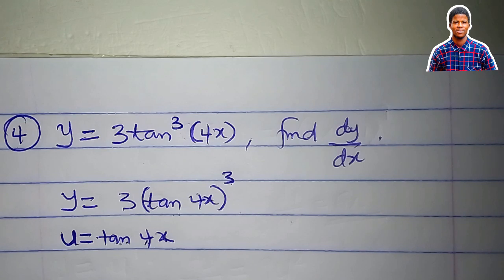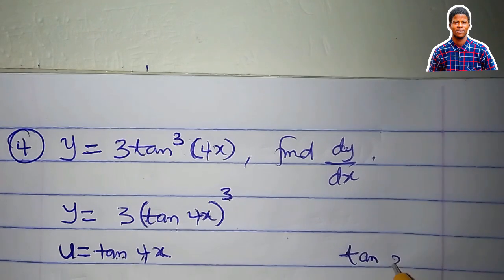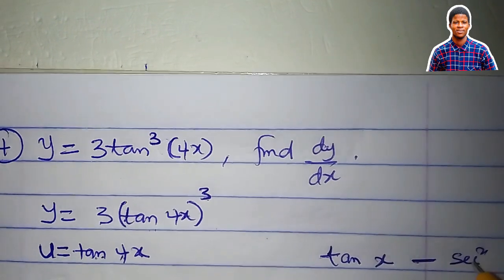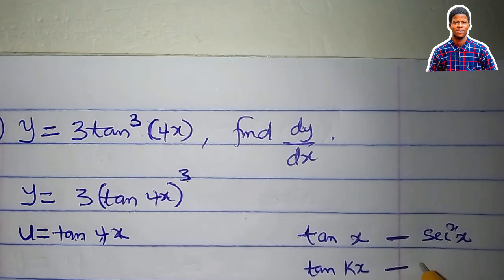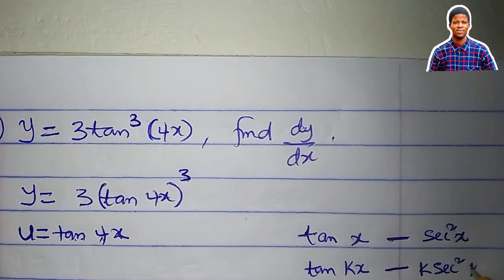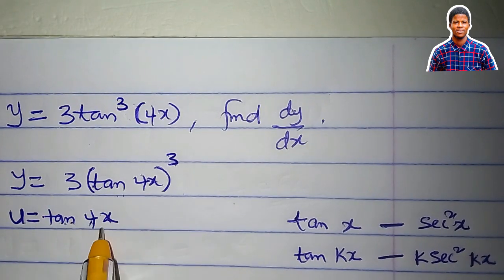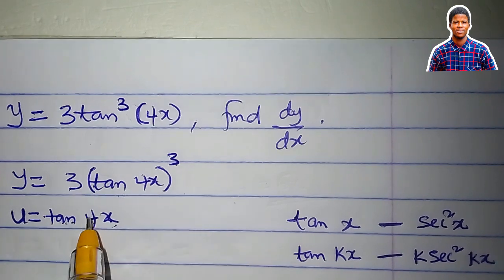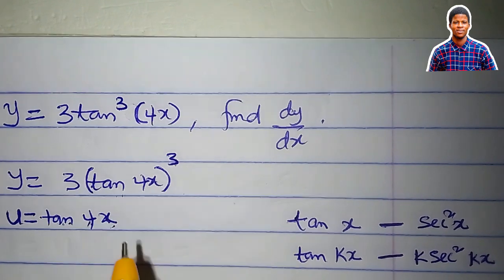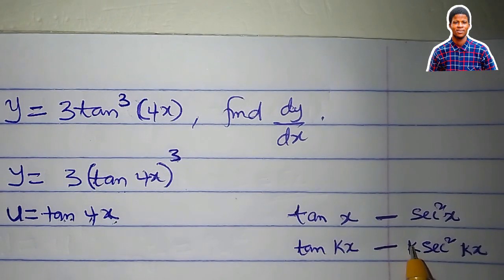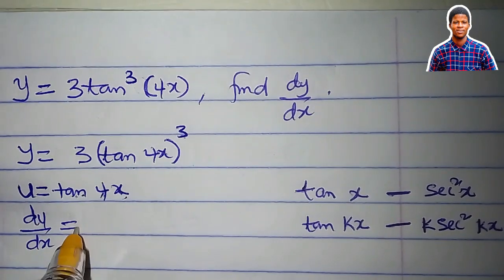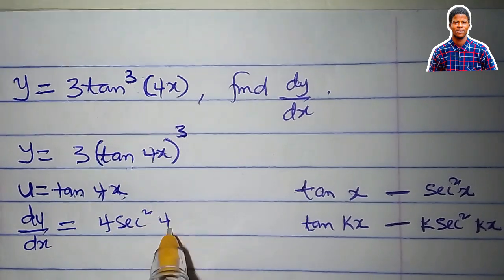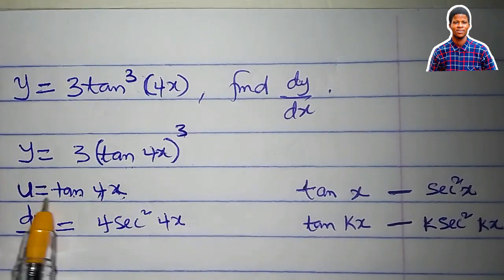The inner function tan(4x) requires the chain rule, but we won't go through that hassle — a standard derivative will do. Remember: the derivative of tan(x) is sec²(x). So for tan(kx), the derivative is k·sec²(kx). Therefore, to differentiate tan(4x): du/dx is equal to 4sec²(4x). This is the derivative of tan(4x) in just one step.